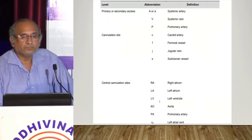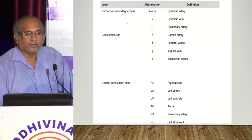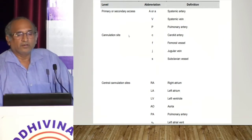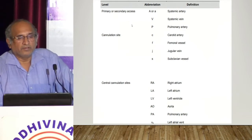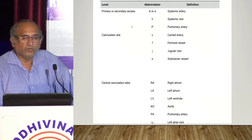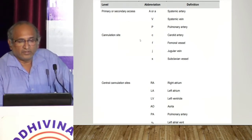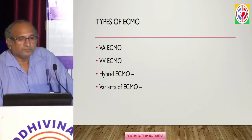These are the different abbreviations that can be used depending on the different components — primary and secondary. X is the cannula site, and this distinguishes central cannulation versus peripheral cannulation.